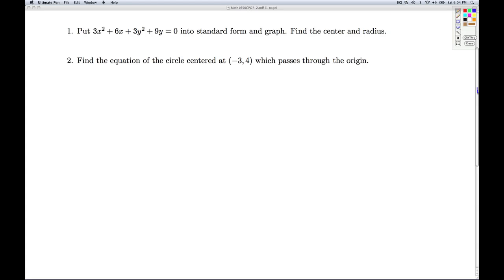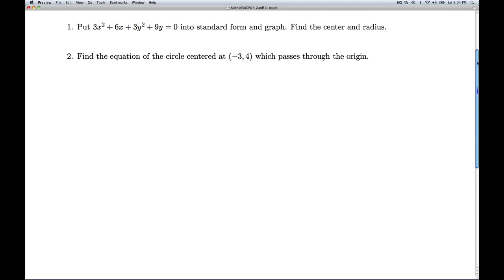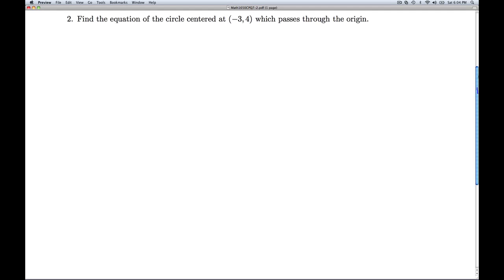Okay, in number 2, we're asked to find the equation of the circle centered at (-3, 4), which passes through the origin. So once again, we go back to our standard equation of the circle. And in order to determine the circle, I need to get three pieces of information: the h, the k, and the r².